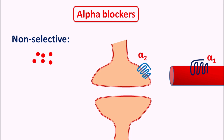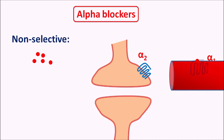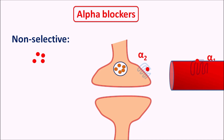Non-selective alpha blockers can act on the alpha 1 receptors, thereby producing vasodilation. They can also block the alpha 2 receptors so that they increase the secretion of neurotransmitters. In the case of catecholamines, the excess release of these neurotransmitters increases the heart rate, resulting in tachycardia. That's why non-selective alpha blockers produce more tachycardia compared with selective alpha blockers.